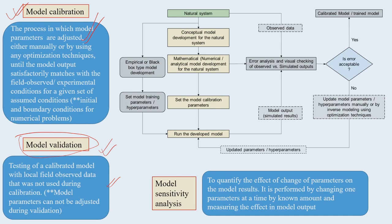For any natural system, conceptual model development is a critical step. Once your conceptual model is ready, you proceed to mathematical, numerical, or analytical model types. To run such a model, you need a good amount of observed data from the natural system. When you choose a model, you also check the quality of the observed data and look for any errors.